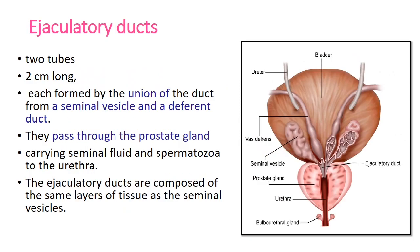The ejaculatory duct consists of two tubes, one on each side of the bladder, each about 2 cm long. Each is formed by the union of the duct from the seminal vesicle and the deferent duct. They pass through the prostate gland, carrying seminal fluid and spermatozoa to the urethra. The ejaculatory ducts are composed of the same layers of tissue as the seminal vesicles.